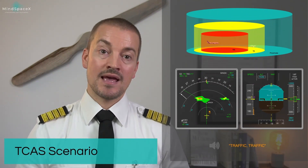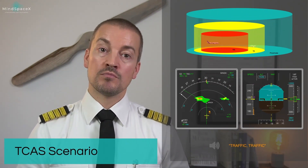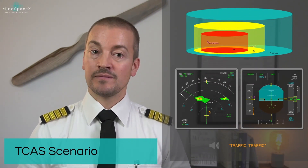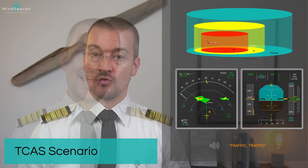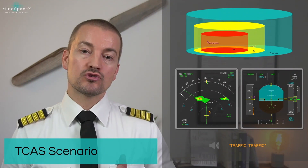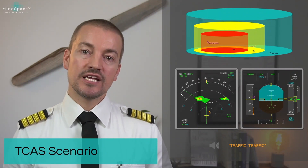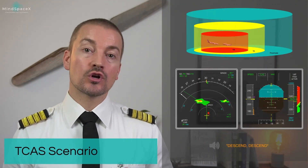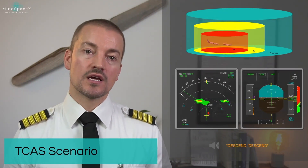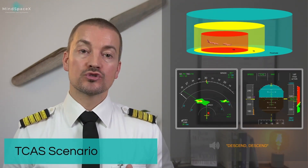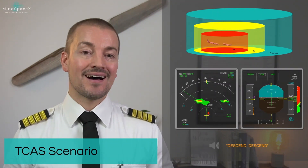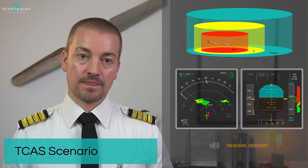There are still no actions for us other than to call out that the TCAS is now armed. As you can see on the FMA, the vertical mode is armed in blue. If our intruder continues to move closer to us, it will trigger an RA.